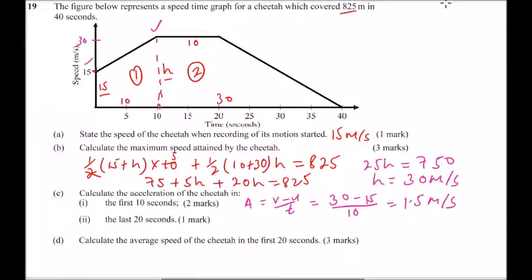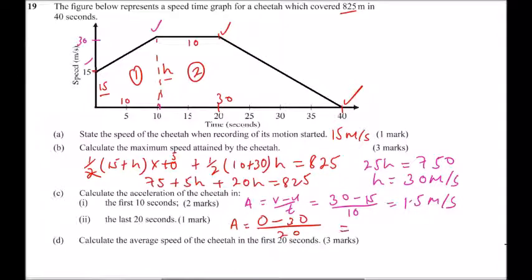Part C(ii): acceleration in the last 20 seconds. Acceleration equals (v minus u) divided by t. Final velocity is 0, initial velocity is 30, and the time interval is 20 seconds. So we get (0 minus 30) divided by 20, which gives minus 1.5 meters per second squared. The negative sign represents deceleration — the cheetah is decelerating or reducing in speed.